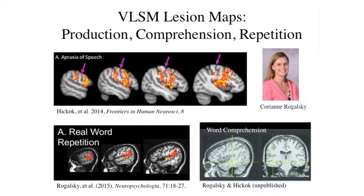Other stroke work looks at apraxia of speech — a motor coordination deficit in acute stroke patients — examining which brain regions are disrupted. Not surprisingly, there are frontal motor-related areas. Word comprehension does not involve this network; it involves more temporal lobe regions. Repetition — perceiving and reproducing speech — involves something in between, which is what you'd expect if repetition is an immediate sensory-motor task.